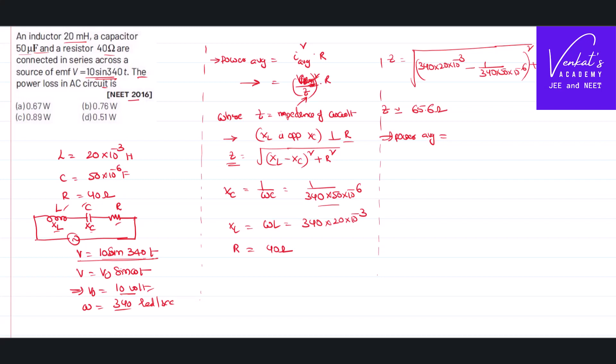Substituting in the formula: V_rms means (10/√2), impedance Z is 65.6, whole squared, times R (40).